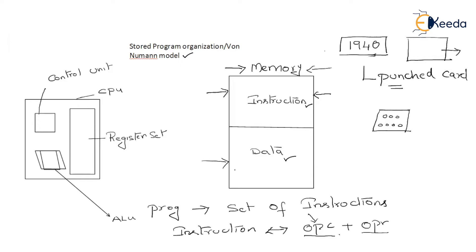This is all about stored program organization. The important and fundamental thing to understand is that memory was invented. A programmer needs to write and store a program in memory for execution. A program is a set of instructions, and each instruction may require operands. So main memory is divided into two parts: the instruction part, which holds all instructions of a program, and the data part, which holds all data elements or operands of a program.